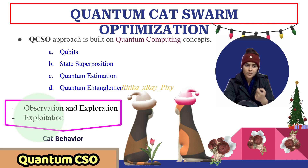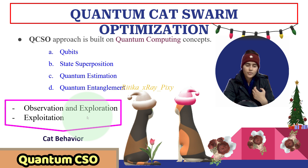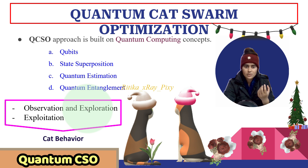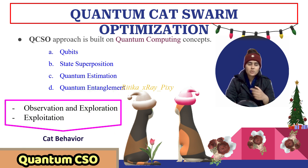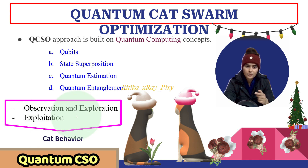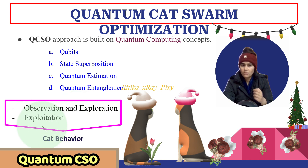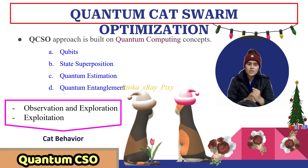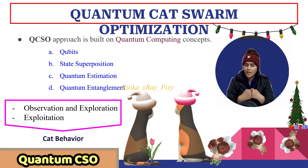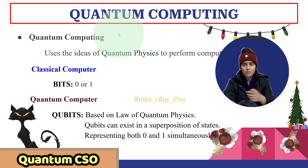Cat behavior is combined here with quantum computing — that is, cat swarm optimization algorithm combined with quantum computing principles. Cat's behavior involves observation: cats observe the environment and explore for food, which is the target. Exploration involves searching for the optimal solution. Next we have exploitation — cats are known for their ability to focus on the target, so the exploitation phase refers to searching around the promising solution. In QCSO, quantum computing principles are combined with cat swarm optimization to solve different optimization problems.